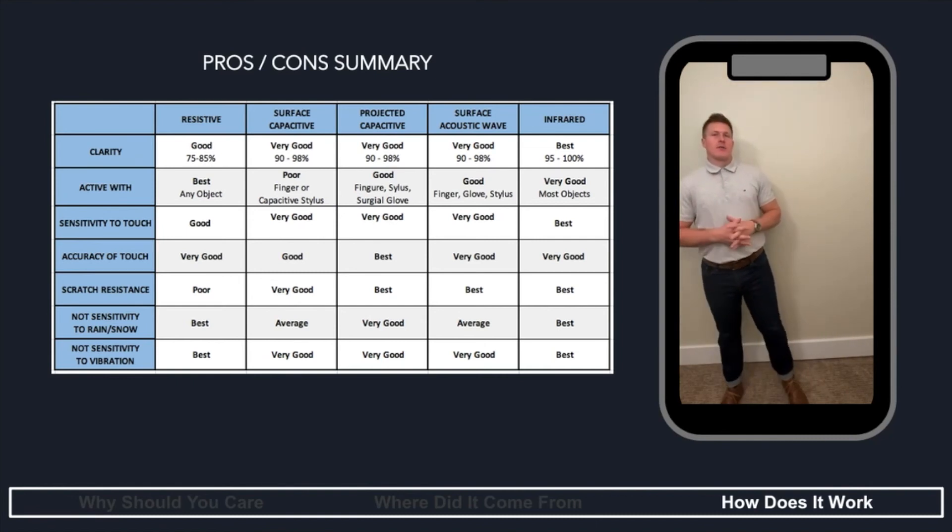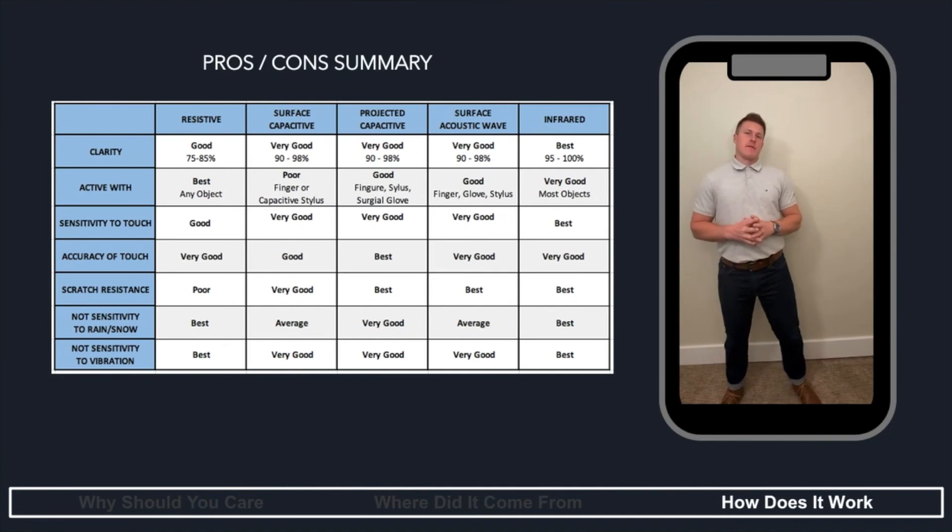Next, we have the SAW, or the surface acoustic wave. This touchscreen technology, as you can see on the chart, is very good in most of the categories, but it's not so good with sensitivity to touch. You can use other objects, but it won't always pick it up.